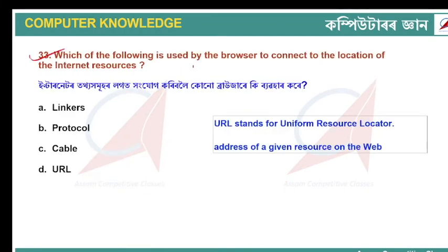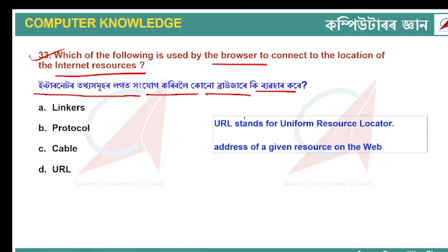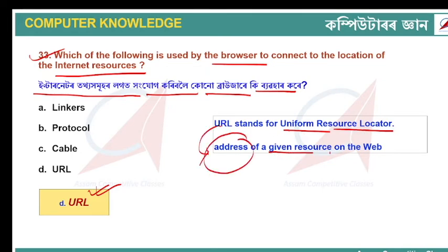Which is used by the browser to connect to the location of internet resources? The answer is URL — Uniform Resource Locator, as discussed in a previous video. A URL is the unique, specific address of a given resource on the internet. The browser uses the URL to connect to that internet resource.